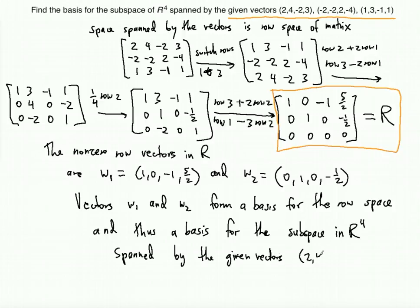vectors (2, 4, -2, 3), (-2, -2, 2, -4), and (1, 3, -1, 1). Write the given vectors here.